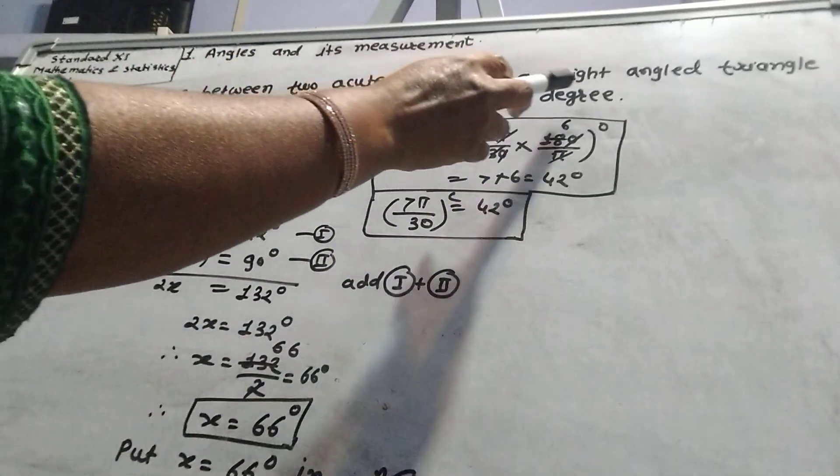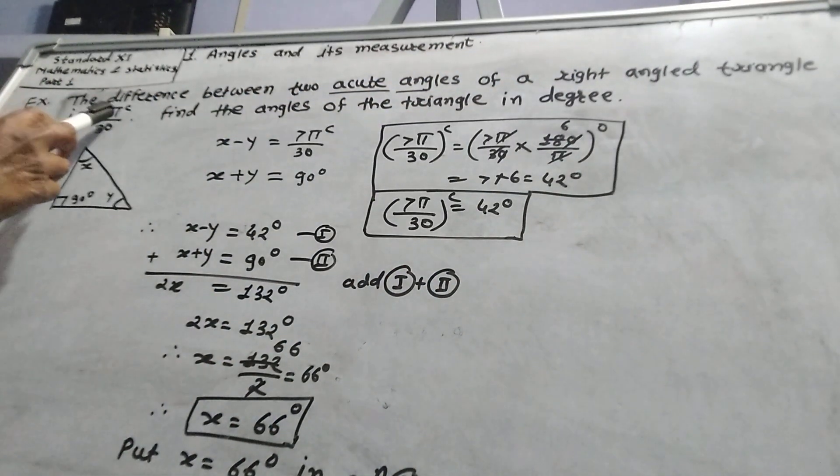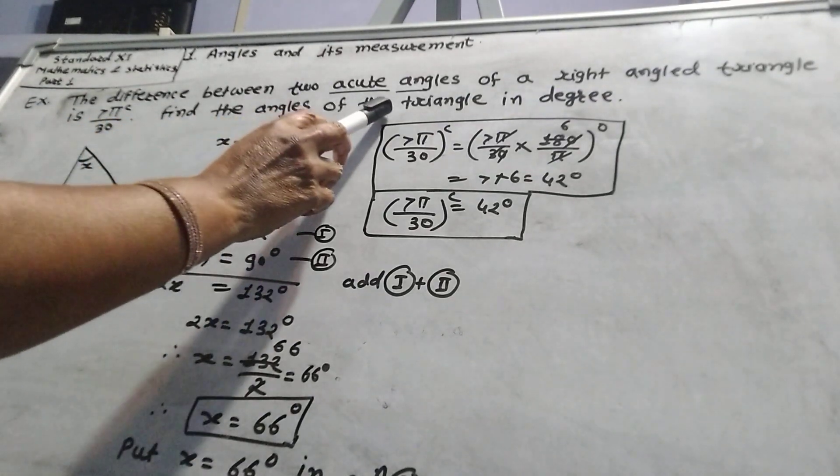The difference between two acute angles of a right angle triangle is 7π/30 radian. Find the angles of the triangle in degrees.